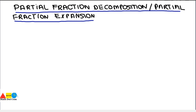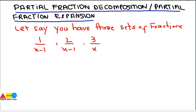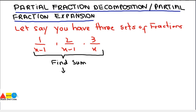Let's say you have three fractions: 1 over x minus 1, and 2 over x minus 1, and 3 over x. These are the three fractions. If we want to find one fraction that is made out of these three fractions, we can find their sum.